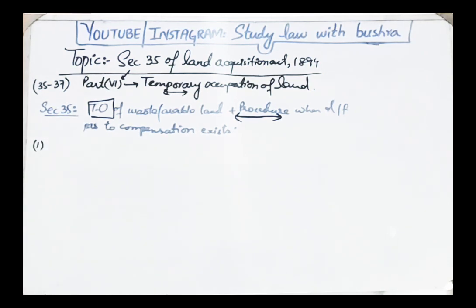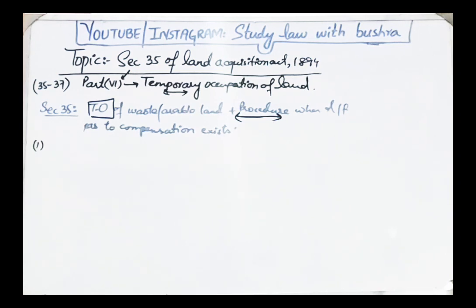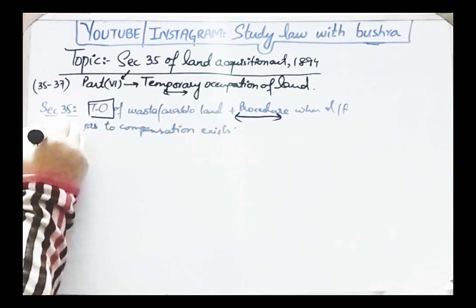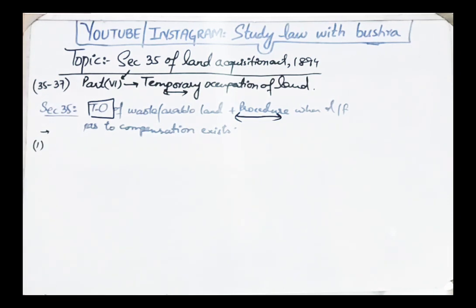Section 35 Clause 1 states: 'Subject to the provisions of Part 7 of this Act, whenever it appears to the Commissioner that temporary occupation and use of any waste or arable land are needed for a public purpose or for a company, the Commissioner may direct the Collector to procure the occupation and use of the same for such term not exceeding 3 years from the commencement of such occupation.'